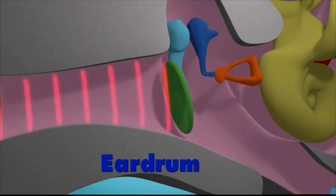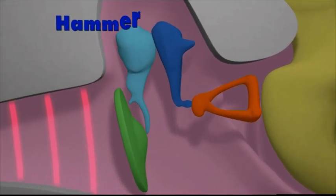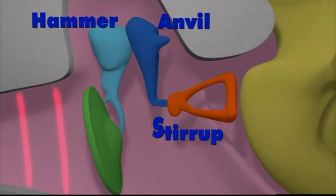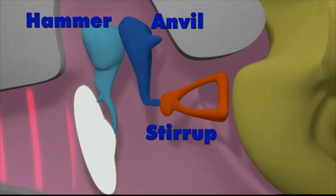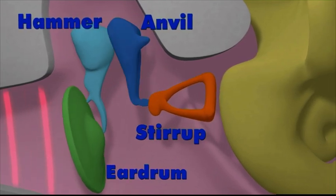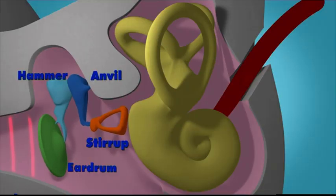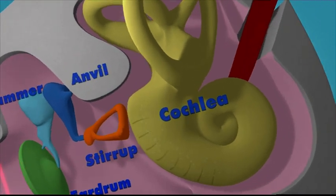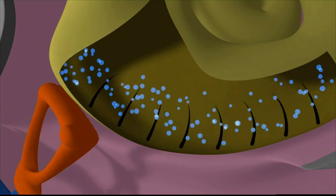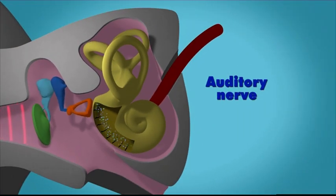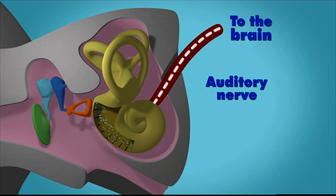Behind your eardrum are three little bones. The first is called the hammer, connected to your eardrum. The next is called the anvil, connected to the hammer. The third is called the stirrup, connected to the anvil. When the eardrum vibrates, the hammer hits the anvil, the anvil hits the stirrup, and sends those vibrations on into your inner ear. This very special part of the inner ear is called the cochlea — it looks like a snail and is filled with liquid which flows over lots of tiny hairs. The vibrations shake the liquid and make the hairs wiggle. These hairs are the start of the auditory nerve, which sends information to the brain, which turns it into the sound we hear.